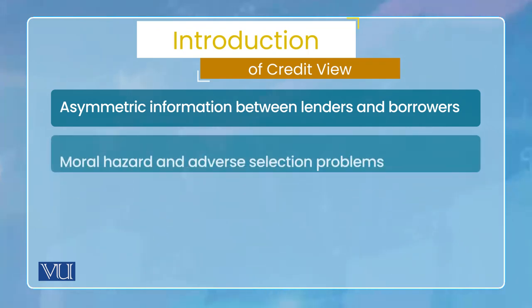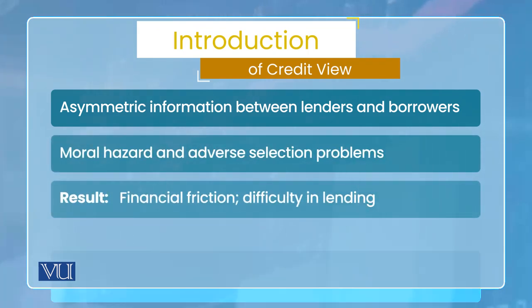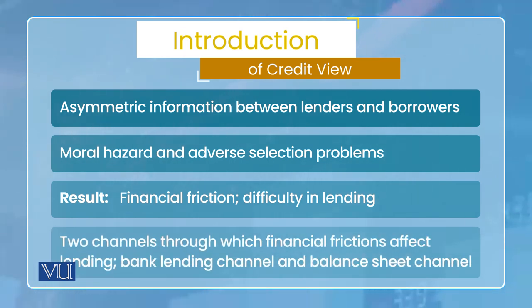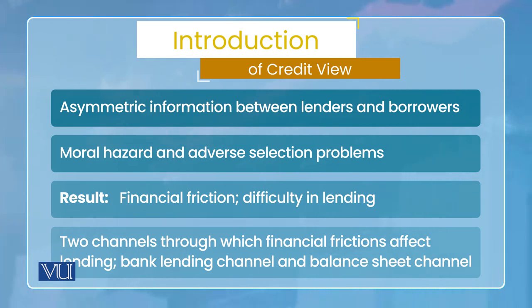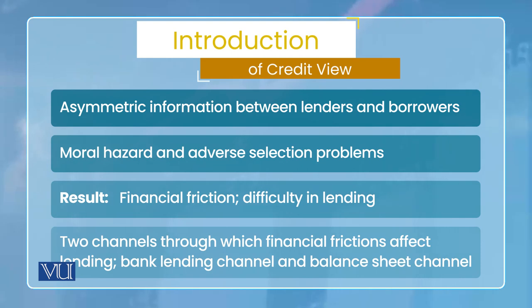Asymmetric information होने का मतलब यह है कि कुछ लोग ऐसे हैं जिनके पास genuine business plan है और वो उसमें investment करके profit earn करेंगे - जिसने lend किया है उसको भी return देंगे, खुद भी earn करेंगे। लेकिन problem asymmetric information यह होती है कि lender को नहीं पता कि जो मेरा borrower है, जो मुझसे funds borrow कर रहा है, वो जिस business में इसको invest करेगा वो कहीं risky business तो नहीं - वो business कहीं डूब तो नहीं जाएगा। क्योंकि उस business की information borrower के पास है, lender के पास नहीं है। तो इसका मतलब है दोनों की information में एक asymmetry है, एक level की information दोनों के पास नहीं है।